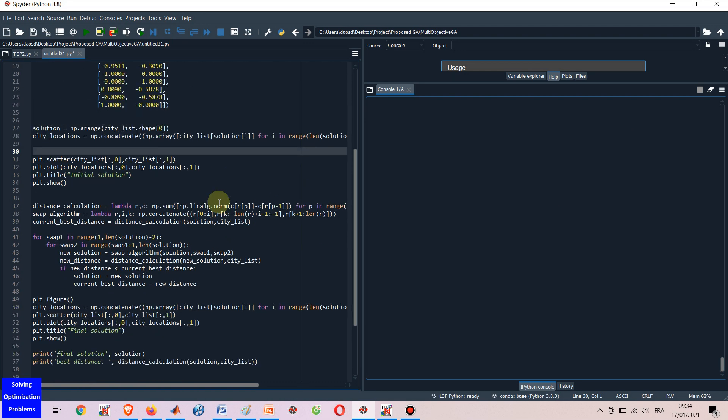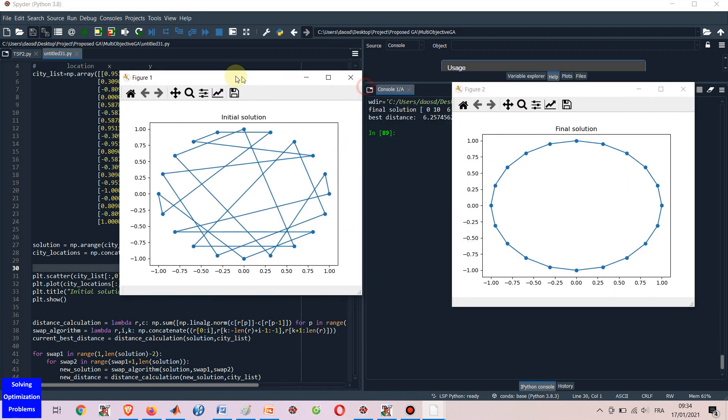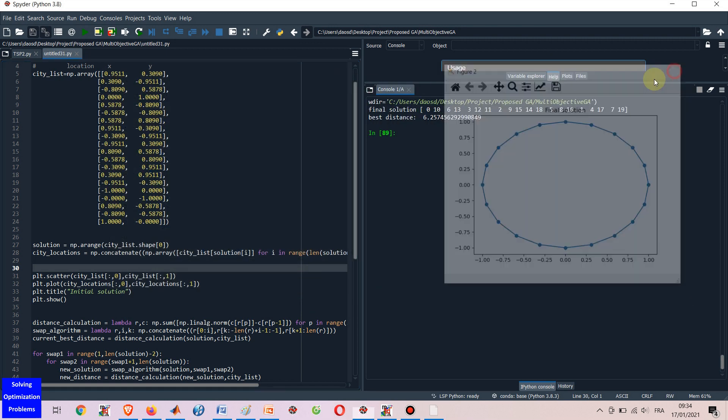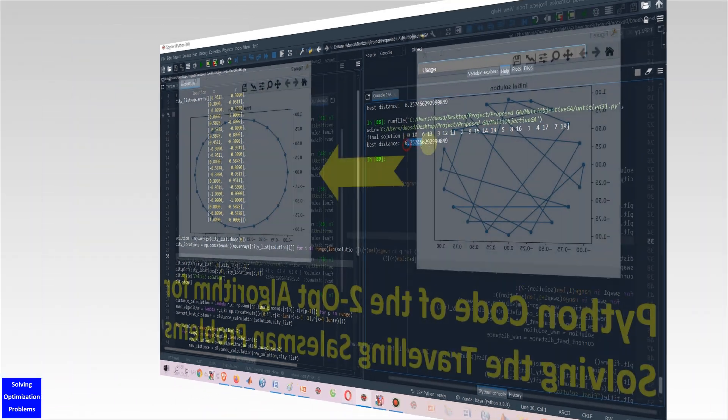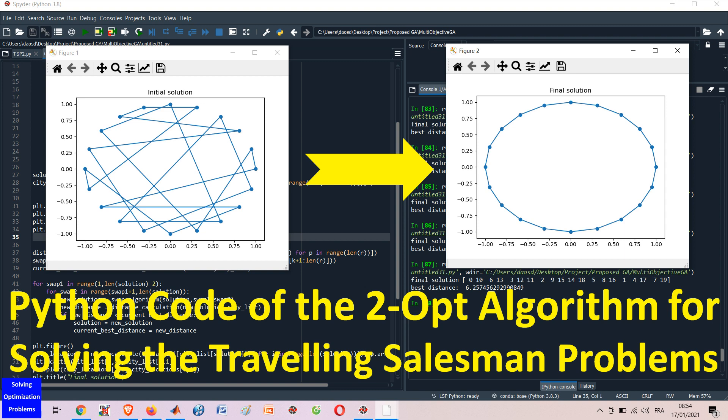Let's see how the 2-opt algorithm solves the traveling salesman problem with 20 cities. Hello everyone and welcome. In this video, I'm going to show you a Python code of the 2-opt algorithm for solving the traveling salesman problems, or TSP.